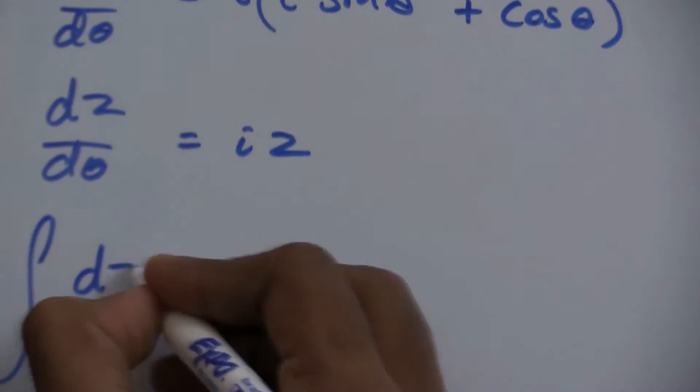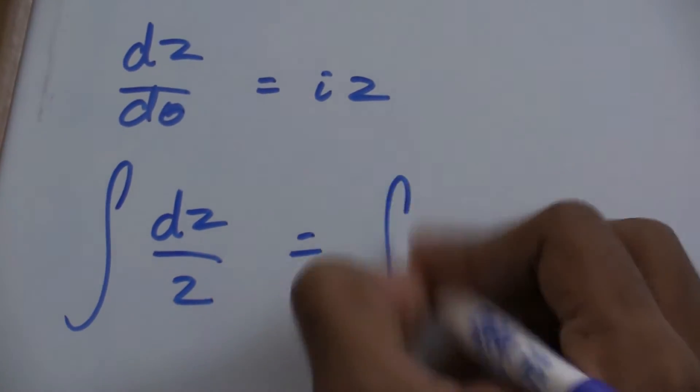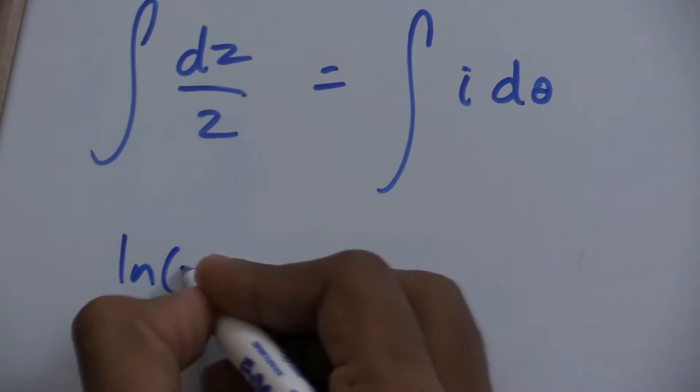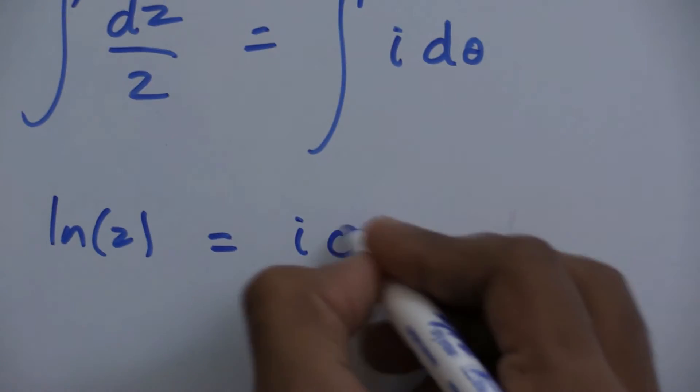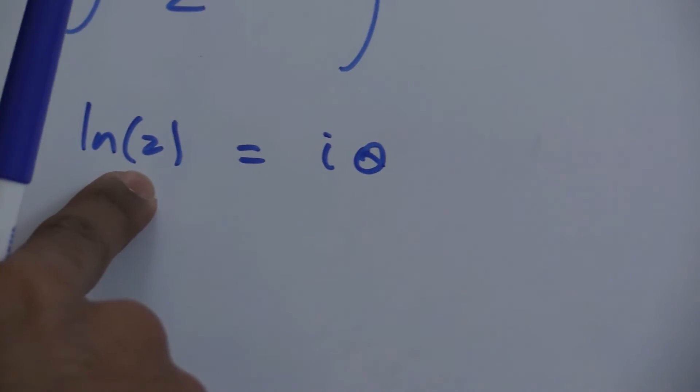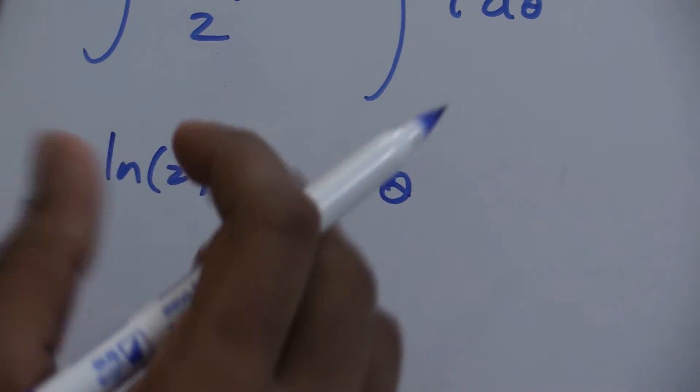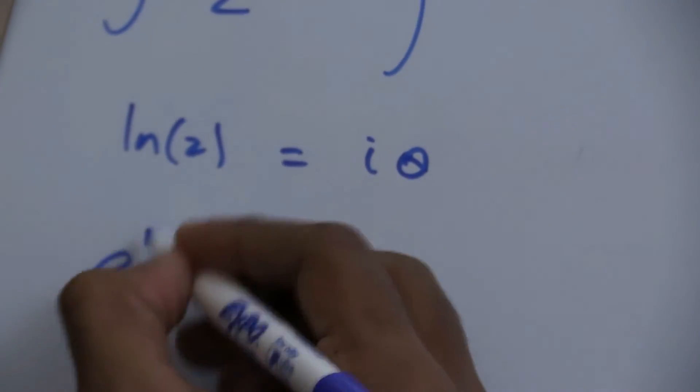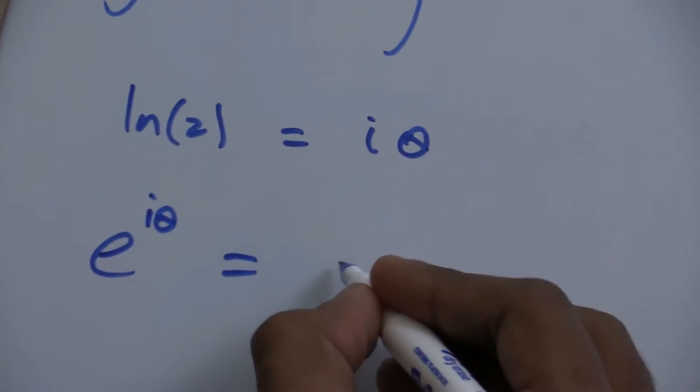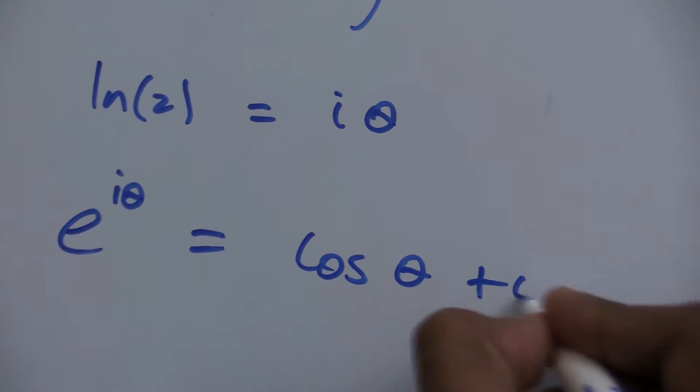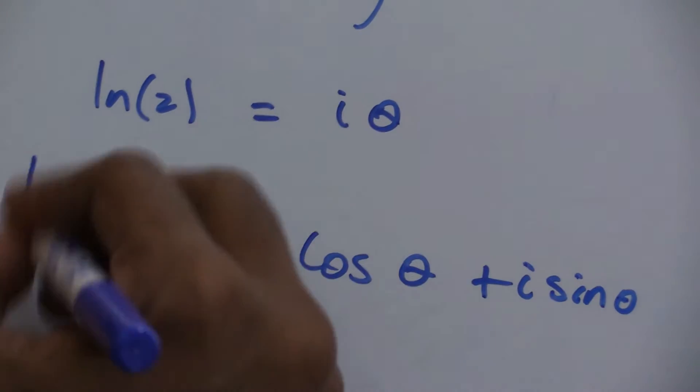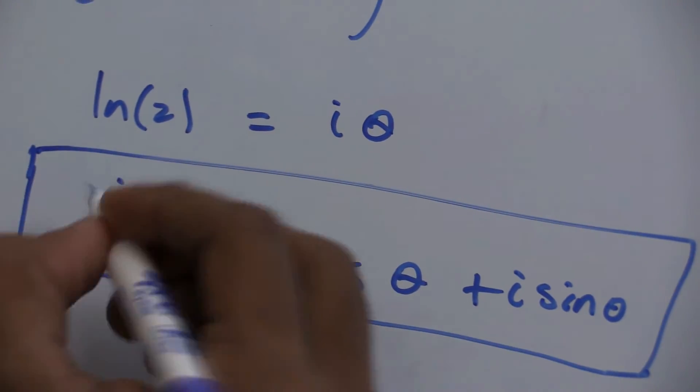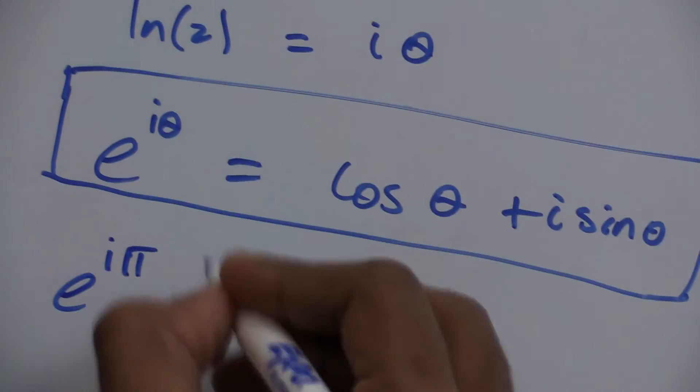Rearranging and integrating both sides, I get ln of z equals i times θ. Notice I didn't need the absolute value symbol because every point on the circle is defined in the ln function. This can be rewritten as e to the iθ equals cosine of θ plus i sine of θ, which is Euler's formula—a powerful tool used in many fields like differential equations.